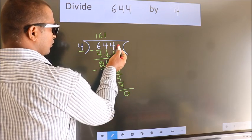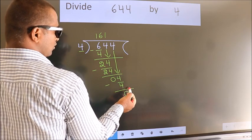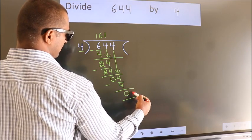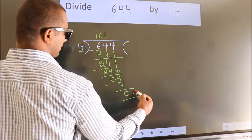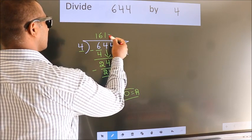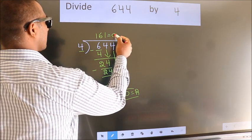There are no more numbers to bring down, so we stop here. This is our remainder, and this is our quotient.